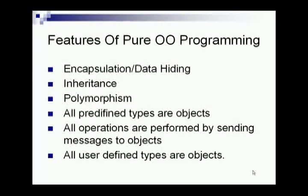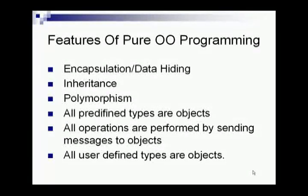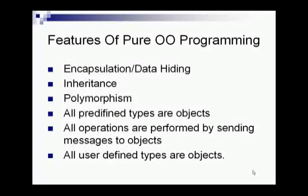The next feature is that all predefined data types are objects. In pure object oriented languages, all predefined data types are objects. As an example, in normal primitive languages there are data types called integers, floats, and likewise. In pure object oriented languages, those predefined types are treated as objects.